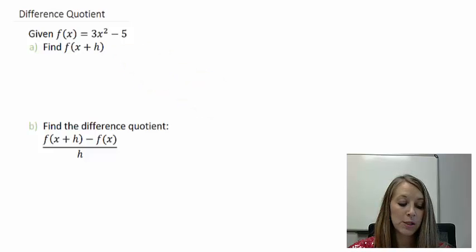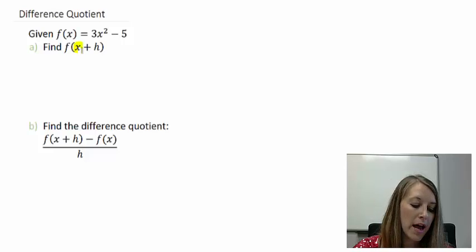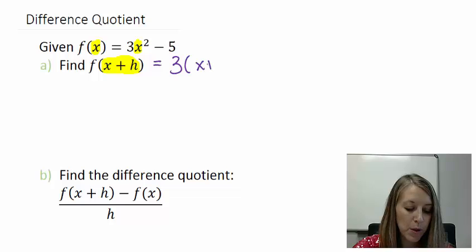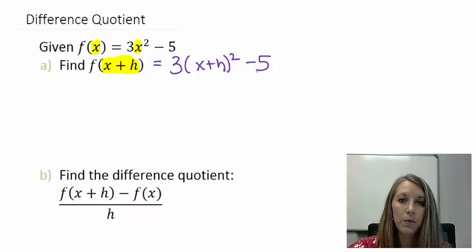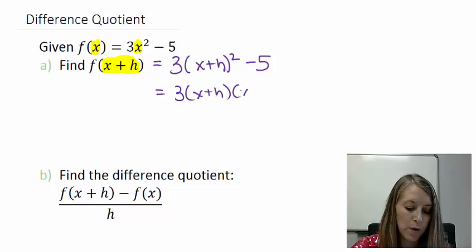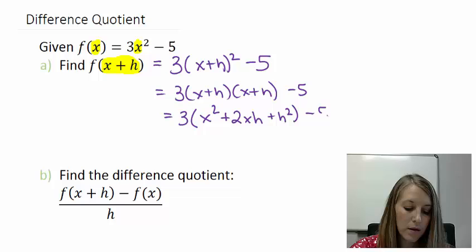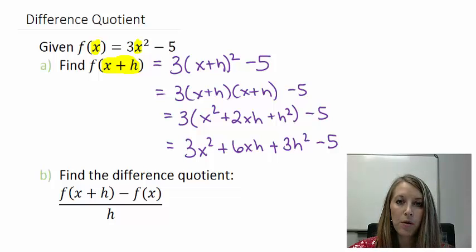So in part A, we want to find f of x plus h, a composition of functions, where we take our x plus h and substitute it in for all of our x variables. That gives me 3 times x plus h squared minus 5. And we want to simplify it. So let's FOIL out our x plus h, because we know that we cannot distribute the square when our operation on the inside is addition or subtraction. So first, that gives me x times x or x squared. Outside gives me an x times h. Inside gives me an x times h, so together that gives me two of those x times h's. And last, h times h is h squared. So let me distribute my 3, gives me 3x squared plus 6xh plus 3h squared minus 5. So that is an example of composition of functions.